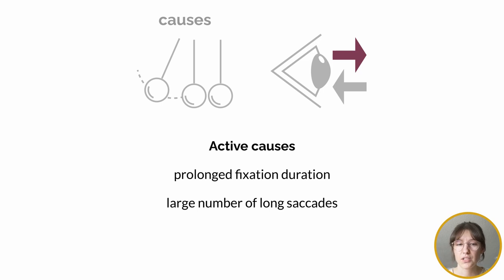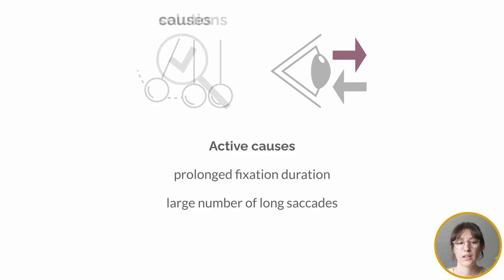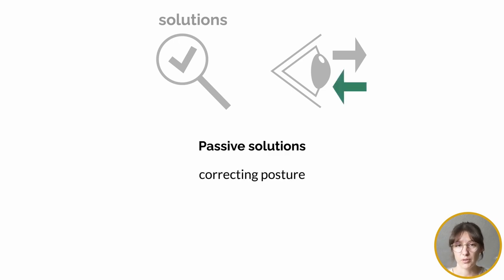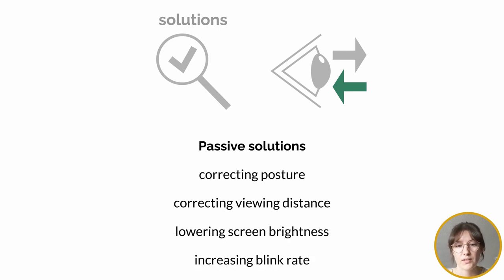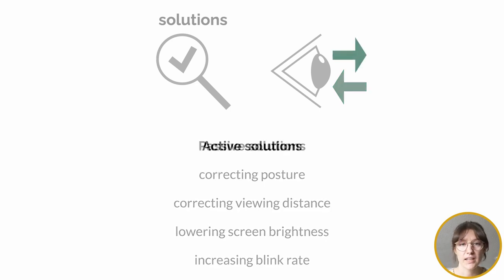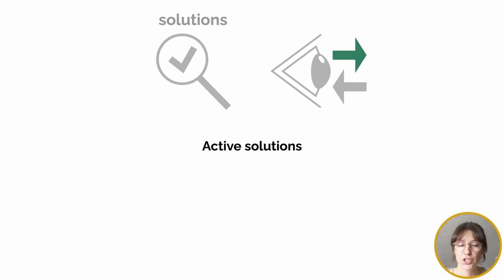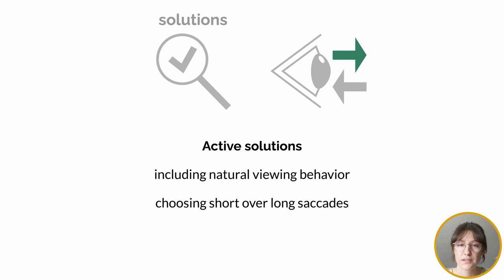Most of the gaze interaction techniques we reviewed include both in some form. The Troxler Hiding Condition (THC) occurs with and without visual feedback and independently of whether gaze was used directly or indirectly. Furthermore, long fixation times seem to have a stronger impact on eye strain than the number of saccades. In terms of solutions, we found a general set including posture correction or correcting close viewing distances. Another cluster of solutions was found for dry eye syndrome, where several works aim to increase the blink rate. For active causes, only a few papers considered digital eyestrain in the design of explicit gaze-based interaction techniques — for example, by including natural viewing behavior or deliberately inducing short instead of long saccades.